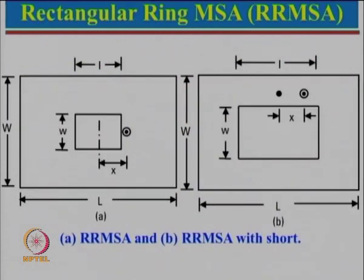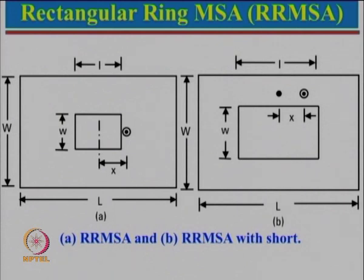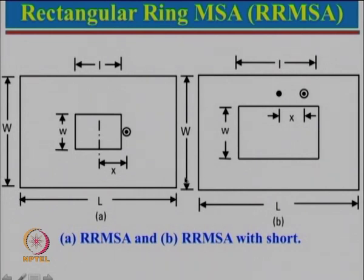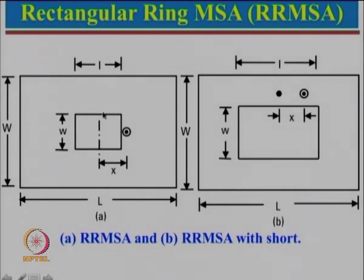Now let us look at the rectangular ring microstrip antenna, where a rectangular slot is cut inside the patch. Without the slot, the current flows directly from one edge to the other with length = lambda by 2. With the slot cut, the current in one portion follows a longer path going up, around, and back, increasing the effective length. Taking the average of the direct length and the longer path and equating to lambda by 2 allows compact realization.